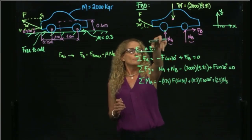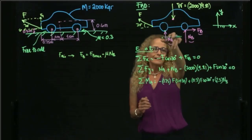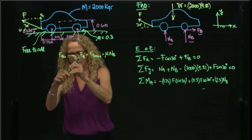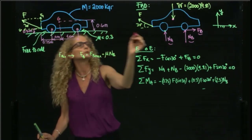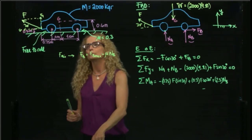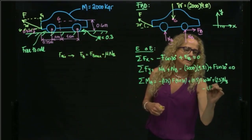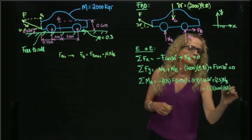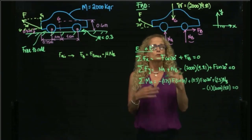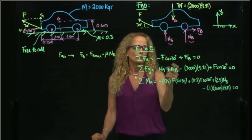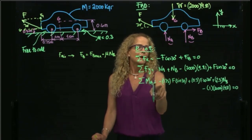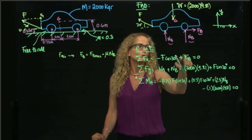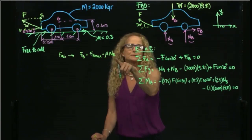The moment produced by the weight is negative, at a distance of 1 to the center of mass, giving negative 1 times the weight. That whole expression equals zero. We also apply FB equals μ times NB to complete the system.